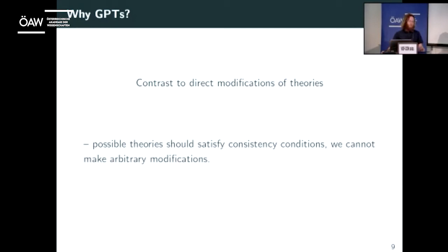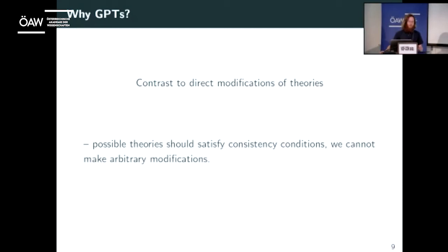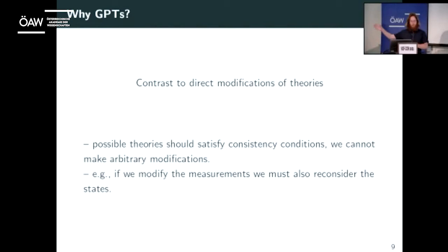GPTs give us this bare-bones formalism which ensures that the theory we get at the end of the day is going to be consistent. The kinds of consistency conditions I mean are that the probabilities predicted for outcomes of experiments should be valued in the unit interval — we shouldn't get a negative probability. One consequence is that if we change the measurements in a theory, we necessarily have to reconsider what our states look like. We can't change one aspect of the theory without doing consistency checks on the other bits.